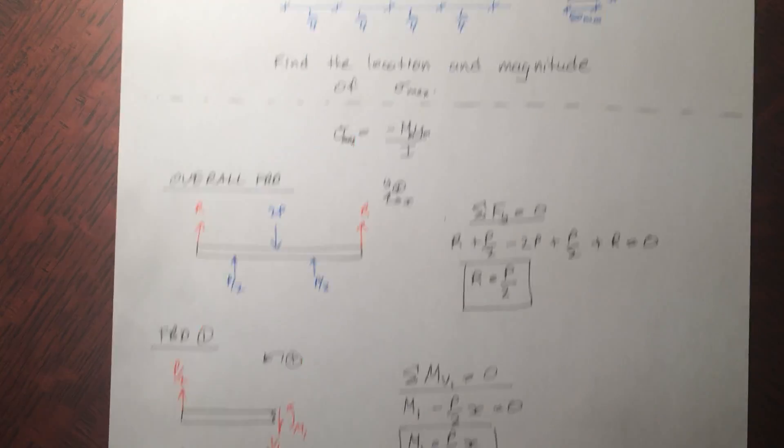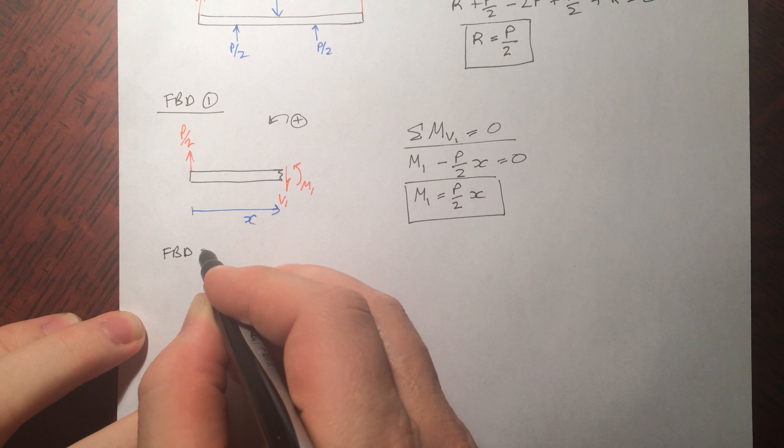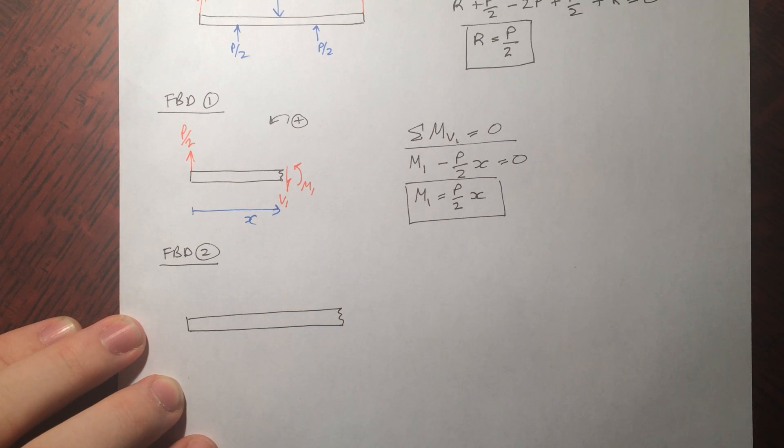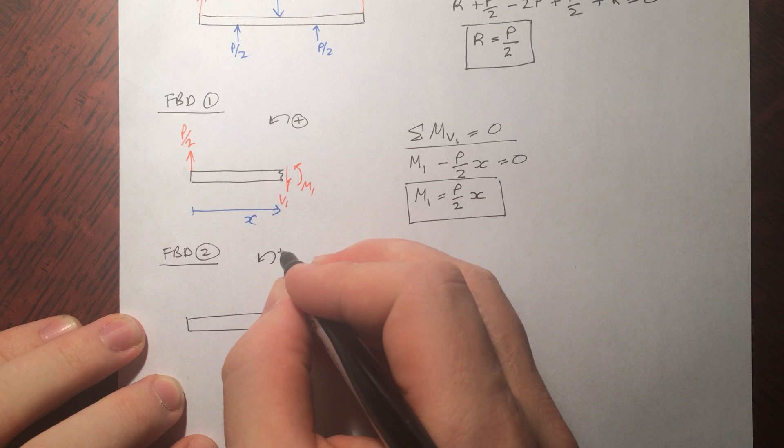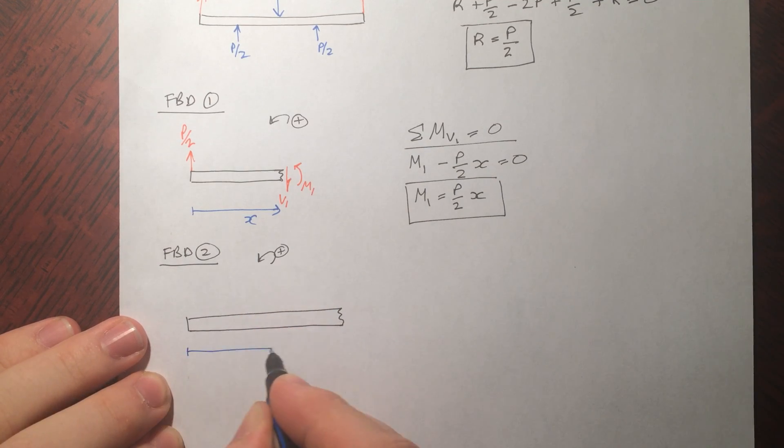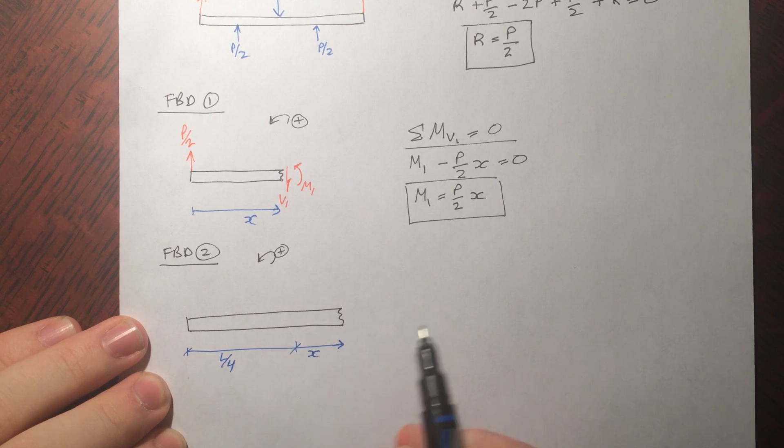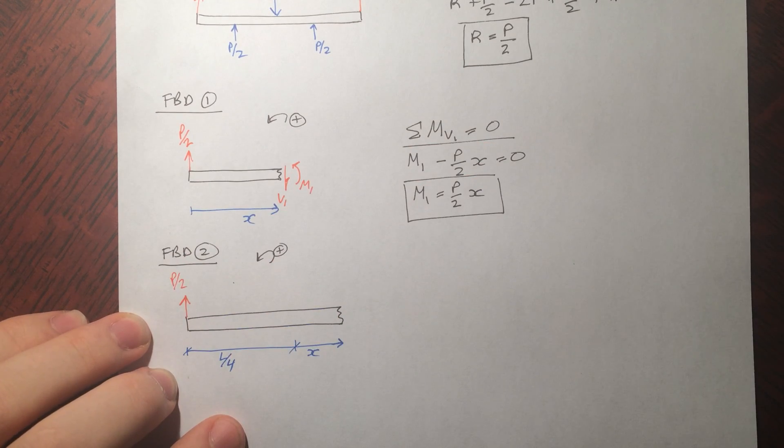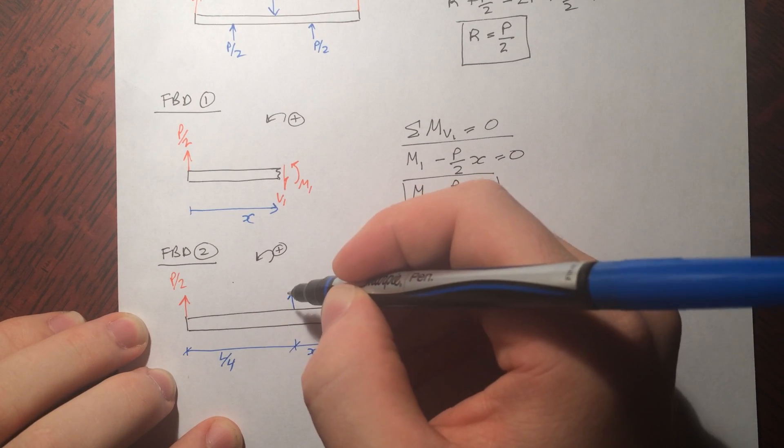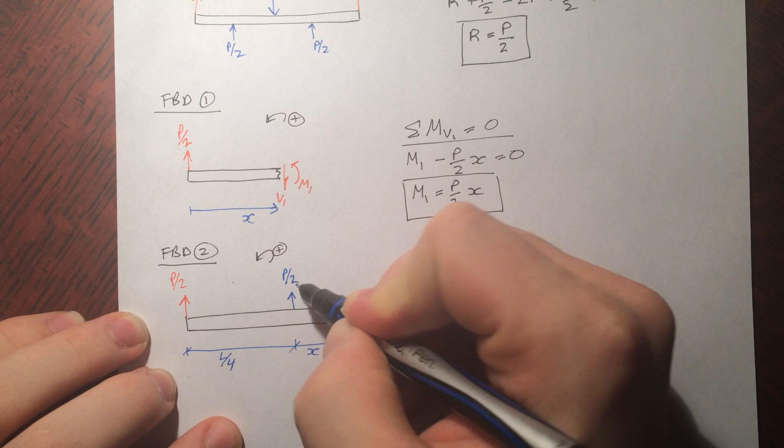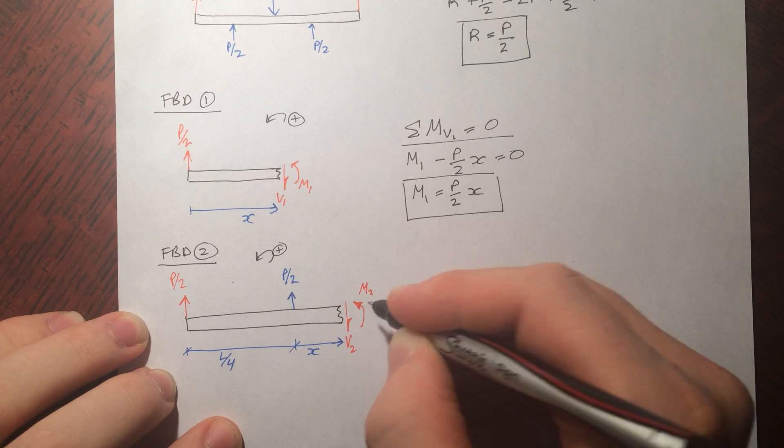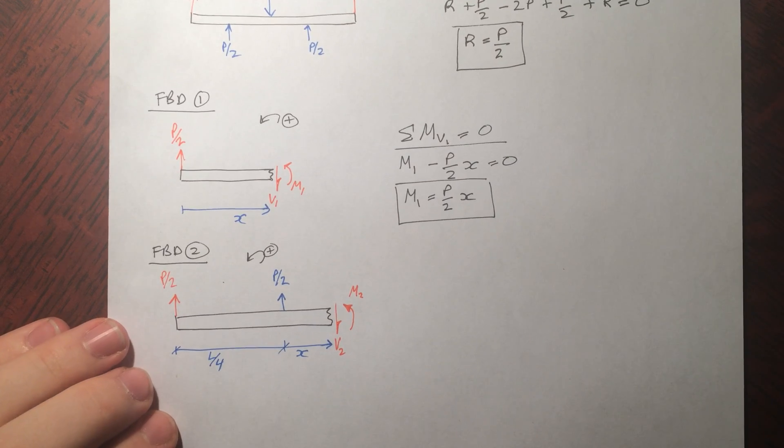Now we'll take a look at piece 2, get a free body diagram of that. So here we go, the free body diagram of the second piece. Now I chose x to start at the position where the condition has changed. The condition changed, of course, is the addition of P2.